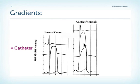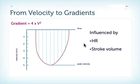We can also calculate a mean gradient in the cath lab. From the peak velocity at the aortic valve using Doppler echo, we can easily determine the maximum gradient over the valve by using the Bernoulli equation, which is four times the velocity squared. The echo machines will calculate this automatically, but it is important to know that the velocity is influenced by the heart rate and importantly by the stroke volume.